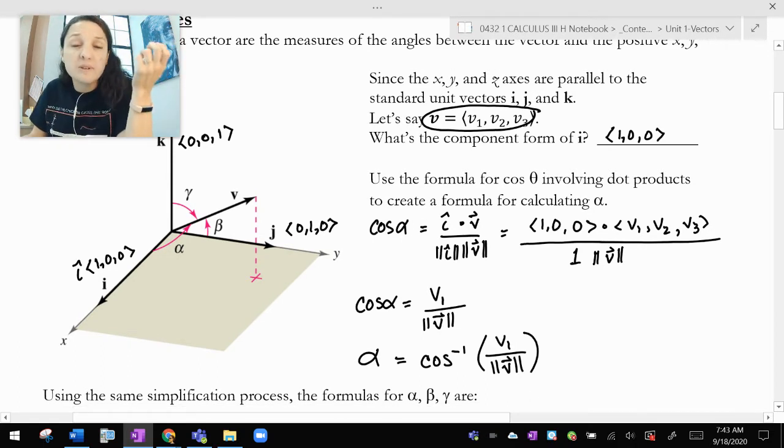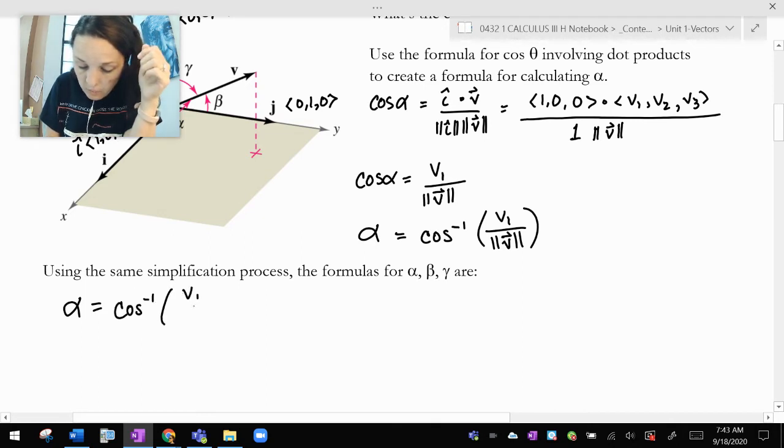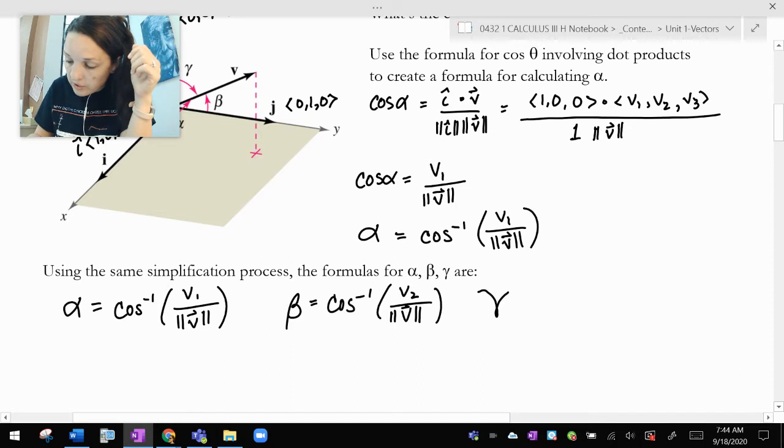So alpha is inverse cosine of v1 divided by the magnitude of v. And then I can do the same exact thing for beta and gamma. Beta is going to be inverse cosine of v2 divided by the magnitude of v. And gamma is going to be inverse cosine of v3 divided by the magnitude of v.